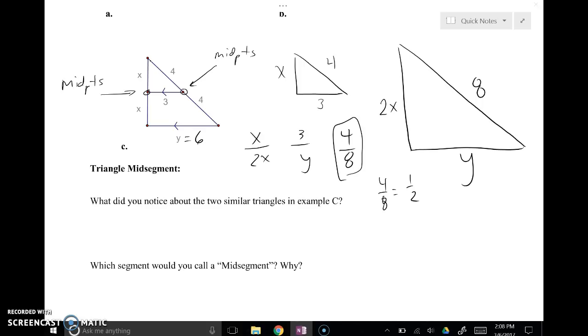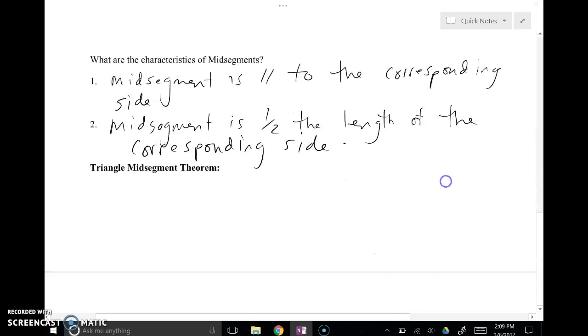So what did you notice about the triangles? Two triangles are similar, and the scale factor is 1 half. We emphasized what the mid-segment was. We talked about the characteristics. One more thing I want to point out. Endpoints are mid-points.